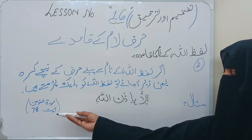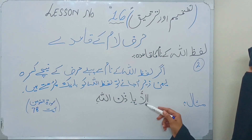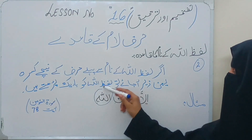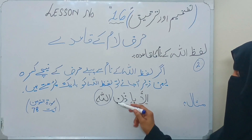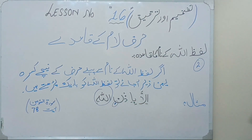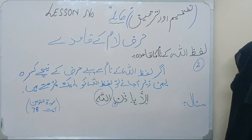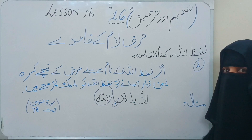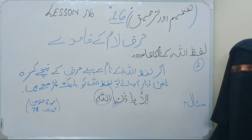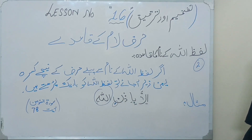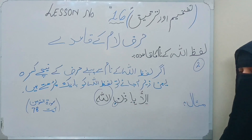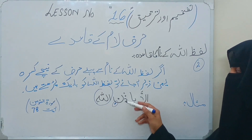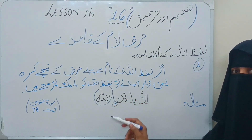اس کا اگزامپل سورة المؤمن verse number 78 میں ہے — إِلَّا بِإِذْنِ اللَّهِ۔ یہاں پر اللہ سبحانہ وتعالیٰ کا نام آیا، اس سے پہلے لیٹر نون ہے، نون کے نیچے کسرہ یعنی زیر آ گئی۔ تو اس کنڈیشن میں we should have to read with an empty mouth — باریک پڑھنا ہے اللہ کے نام کو۔ إِلَّا بِإِذْنِ اللَّهِ۔